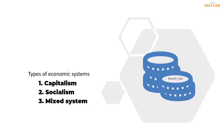In a mixed system, both capitalism and socialism combine. Private companies and the government share equal power. Both government and private individuals mutually produce goods and services. The government has some controlling power and private organizations also have power; private firms and the government together take decisions and solve the economic problem.